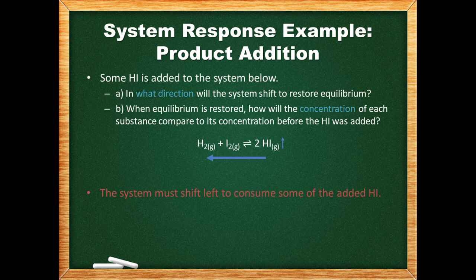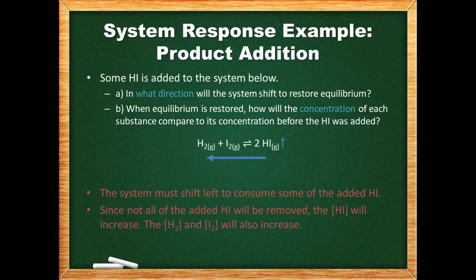Next, we need to look at how the concentrations of each substance have changed. Although the system has shifted to remove some of the added hydrogen iodide, it will not remove all of it. The concentration of hydrogen iodide will have increased. Since the reaction shifted left, the concentrations of hydrogen and iodine have increased as well.